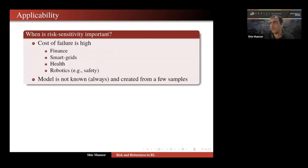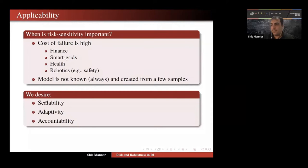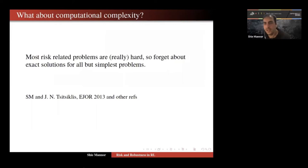When should you care about risk sensitivity? You should care about it when the cost of failure is high — for example, smart grids, where if you were from Texas you would care quite a bit right now. Of course, the model is never known exactly when derived from data. From the five principles, I care mostly about scalability — I look for algorithms that can be extended to very large state spaces — adaptivity, which is the risk sensitivity aspect, and accountability. I want to be able to explain why I did what I did in terms of risk; for example, I want to say that I protected against some form of risk.